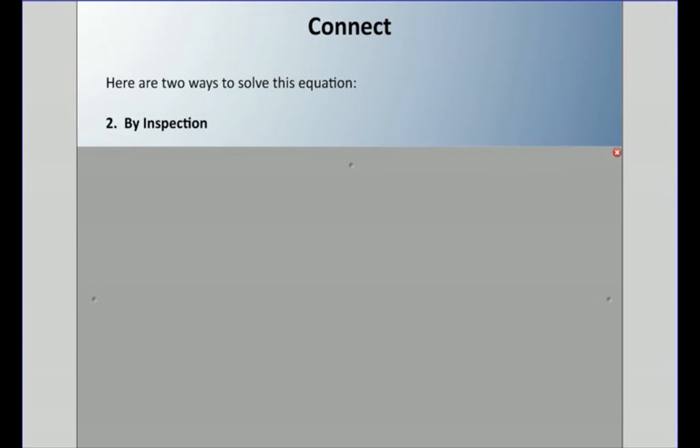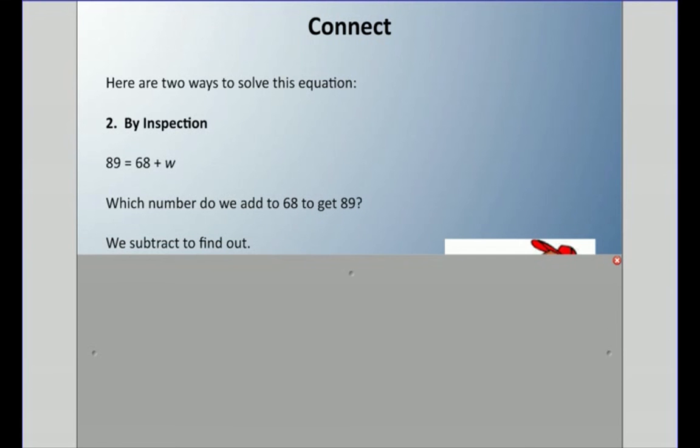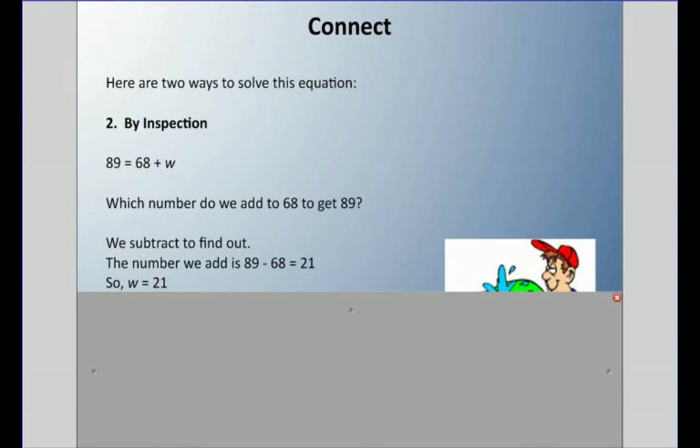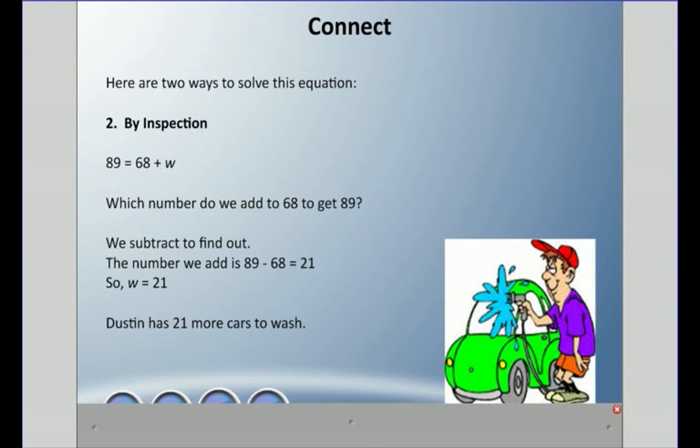The second way we could solve this problem is something called inspection. Here's our equation, and so which number do we need to add to get to 89? We can use subtraction. Subtraction and addition are actually inverse of each other, they're opposite. So we can say if we subtract 68 from 89, we will find out what is left over to do. So w equals 21. Dustin has 21 more cars to wash.